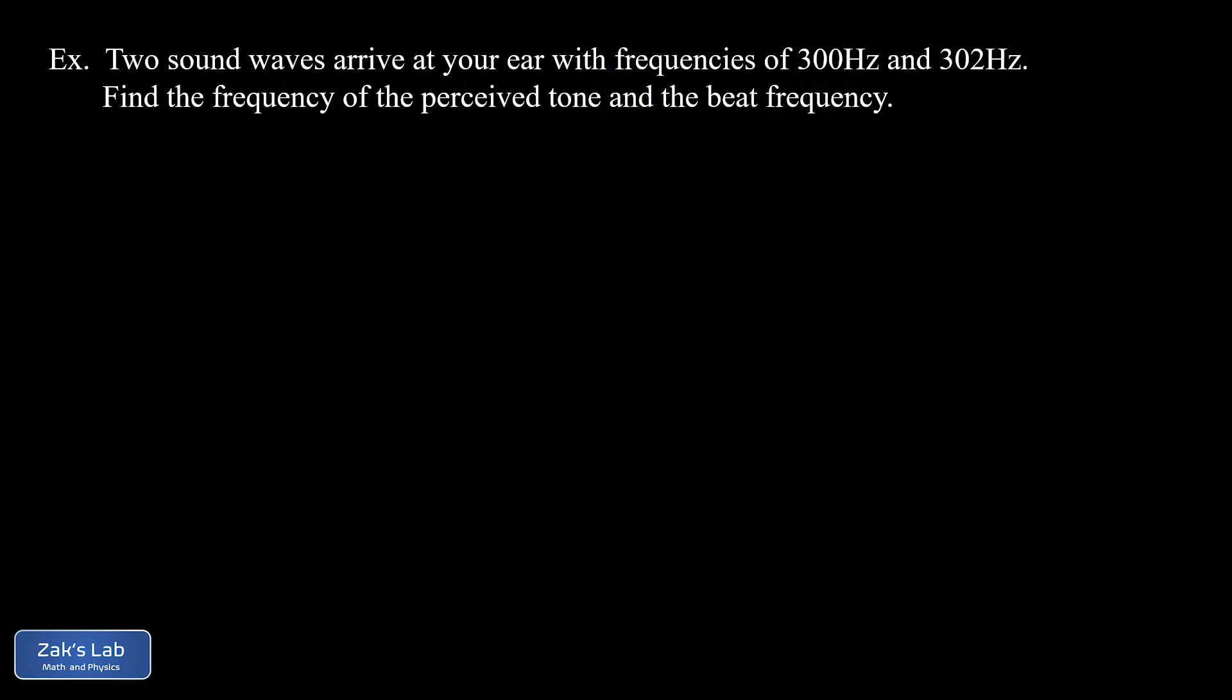We'll wrap things up with a quick example. We've kind of already been working on this example. We're told we have two sound waves arriving at our ear with frequencies of 300 hertz and 302 hertz. We want to find the frequency of the perceived tone and the beat frequency. The tone that you're going to hear has a frequency equal to the arithmetic mean or just the simple average of the frequencies of the two participant waves. So the average of 300 and 302, that's 301 hertz. And of course, that's practically indistinguishable from 300 hertz or 302 hertz. They all sound the same to me, but maybe there's some musical savant out there that can tell the difference.